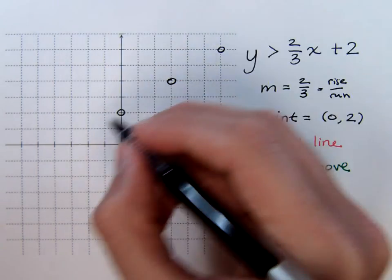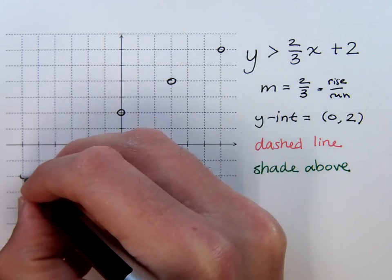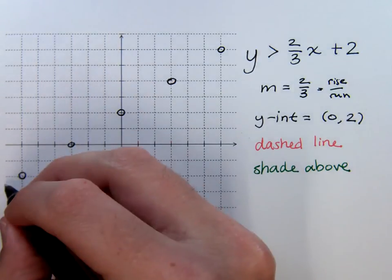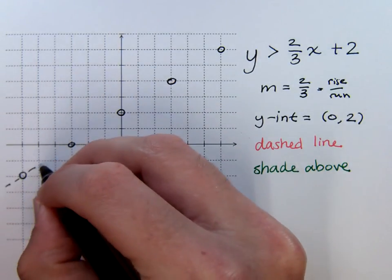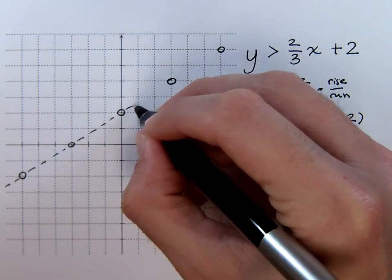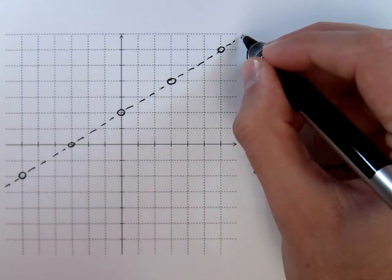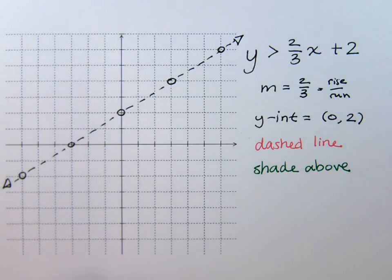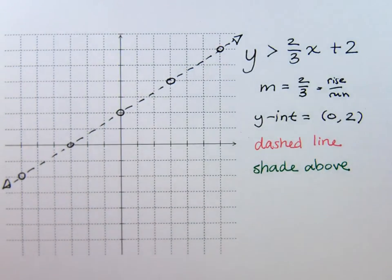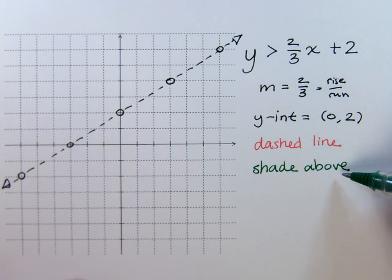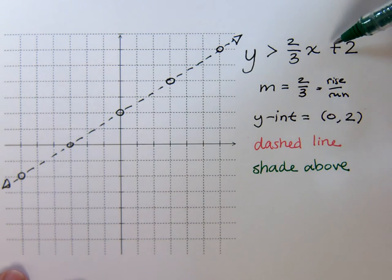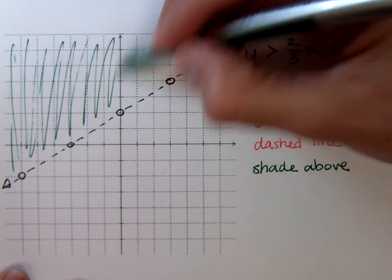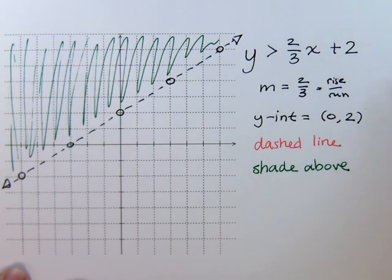I can repeat this same pattern going down and to the left. I like to do this to have as many points as possible — it helps me have a nice accurate graph. Now this is going to be a dashed line, so just very carefully dash this line, and we will have arrows at the end. We're almost done — we just have to use this last part, which says we need to shade above. All the y's are greater than, so we're going to be shading above the line.